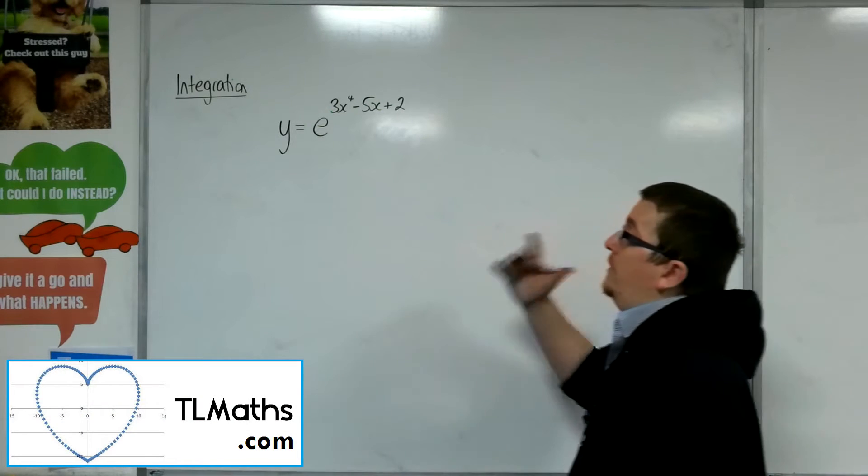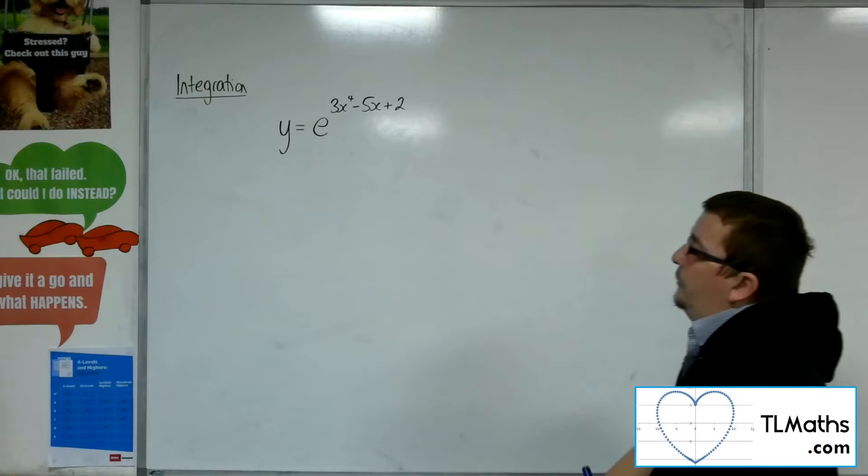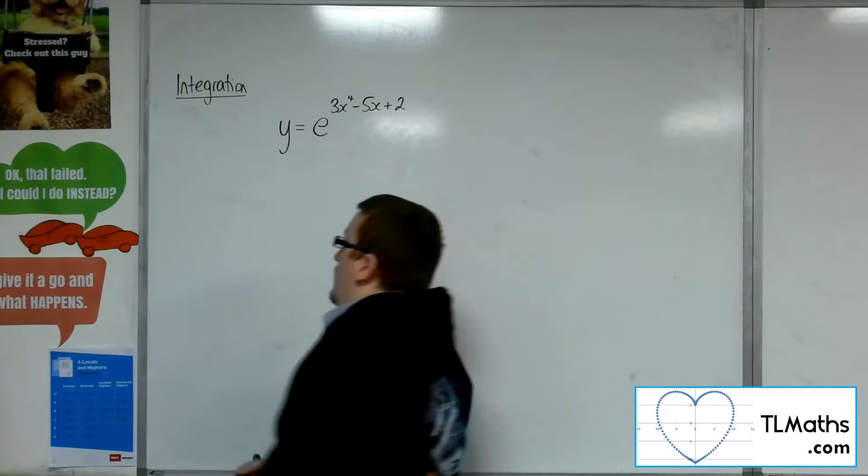So let's say I want to differentiate y equals e to the 3x to the 4 minus 5x plus 2. Now I can use the chain rule to differentiate that.